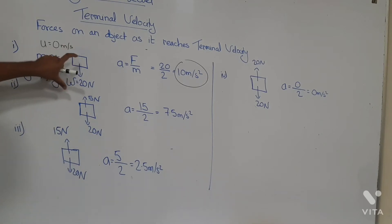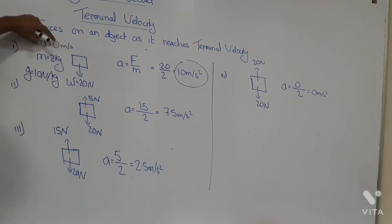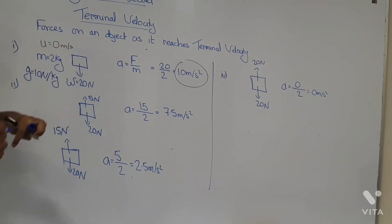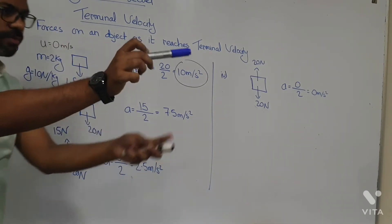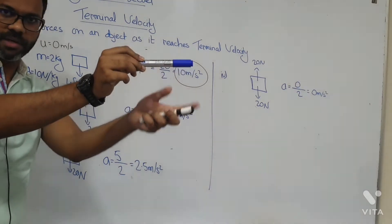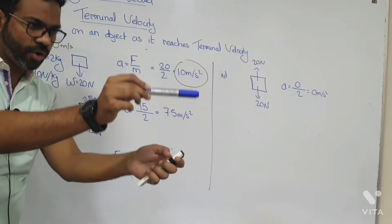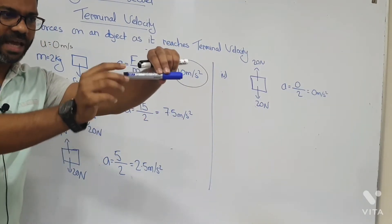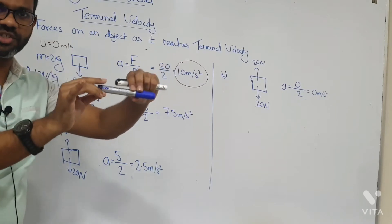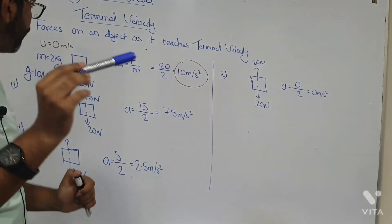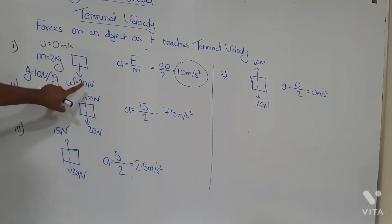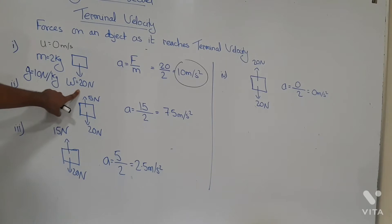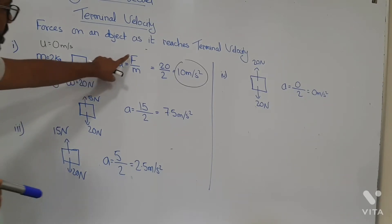When the object is falling initially, it starts from rest — we have dropped the object and it's falling down. It has a weight of 20 Newtons and a mass of 2 kg. At the very beginning, the only force acting on it is the weight of the object.